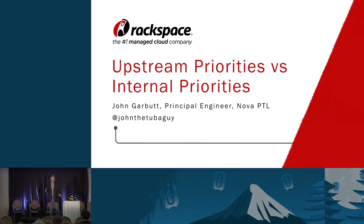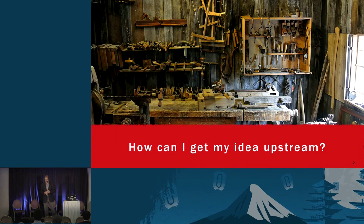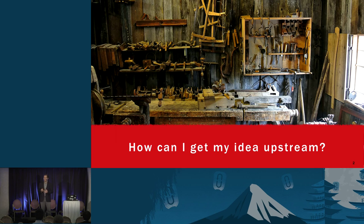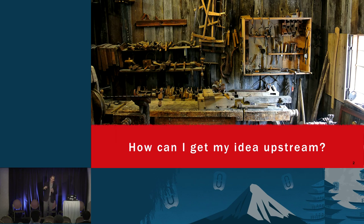Today, this talk is about the friction between upstream priorities and internal priorities. When preparing this, I think it all boils down to one question: you've been busy working away, you've installed OpenStack, you're using it, you come up with a great idea and think, how do I get this upstream? There are lots of talks about why you'd want to go upstream. I'm going to concentrate on how you take that idea and communicate it with the upstream community.